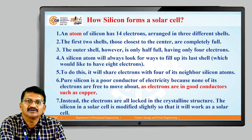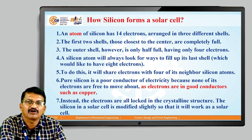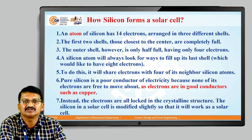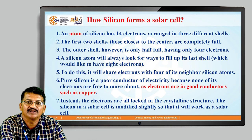Now we can see how silicon forms a solar cell. An atom of silicon has 14 electrons arranged in 3 different shells. The first two shells, those closest to the center, are completely full. The outer shell, however, is only half full, having only 4 electrons. A silicon atom will always look to fill up its last shell, which would like to have 8 electrons. To do this, it will share electrons with 4 of its neighbor silicon atoms.